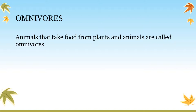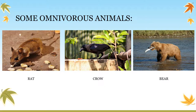Those animals which depend on both plants and animals for their food are called omnivores. Let us see some examples of omnivore animals. Bear, rat, and crow. As you can see in this picture, bear is catching a fish. Bear generally eats fruits, grass, and other products obtained from plants.